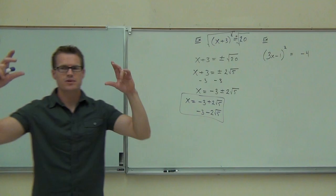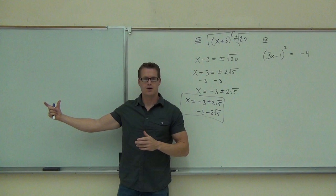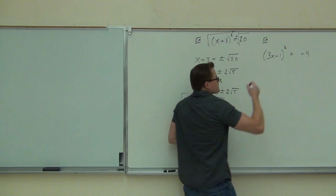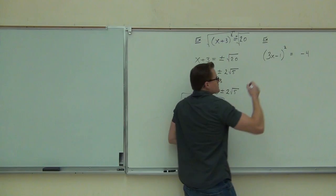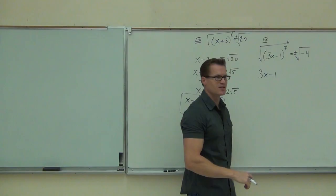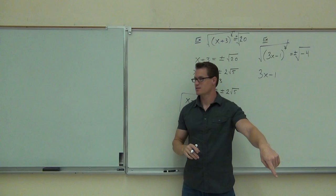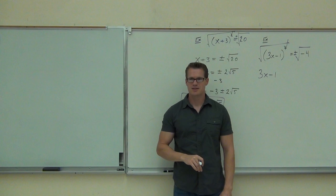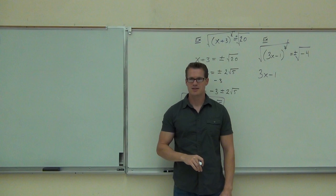Now the next example: (3x minus 1) squared equals negative 4. Do I have something squared equals a number? Yes. Take a square root of both sides with plus or minus. On the left we get 3x minus 1. Can I take the square root of a negative number? Don't say no solution — remember i! You can take the square root of a negative number now.